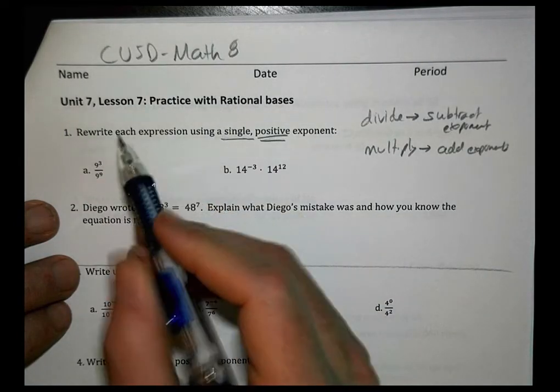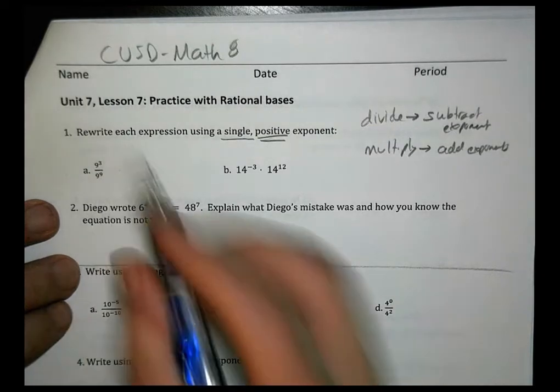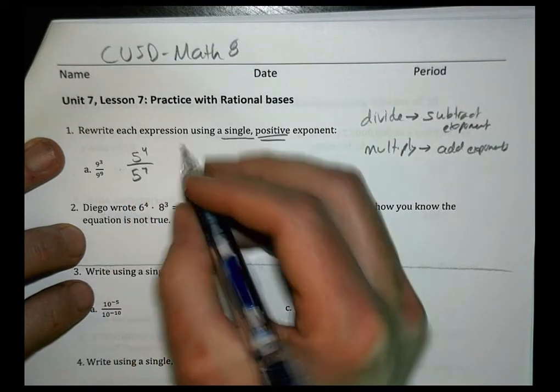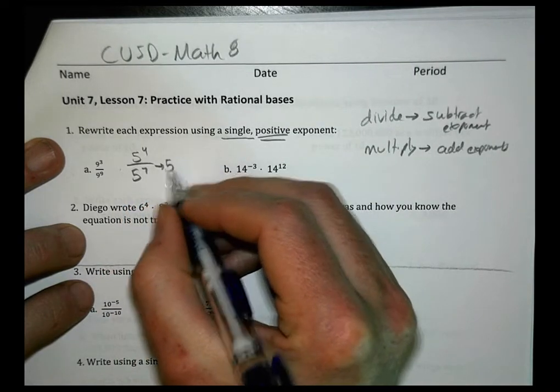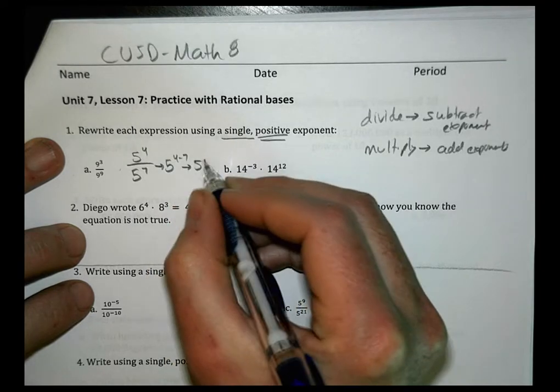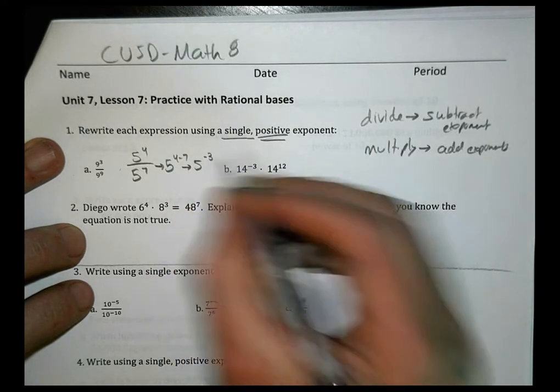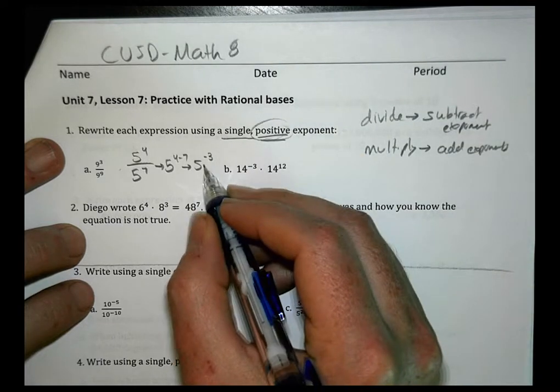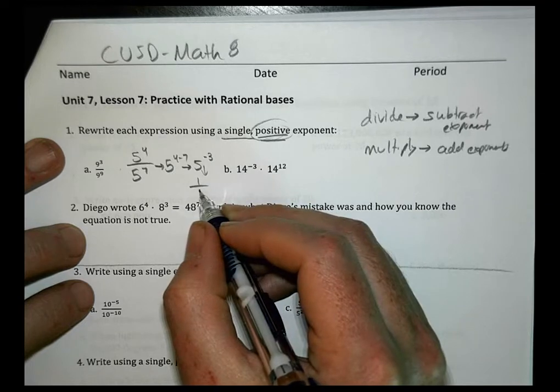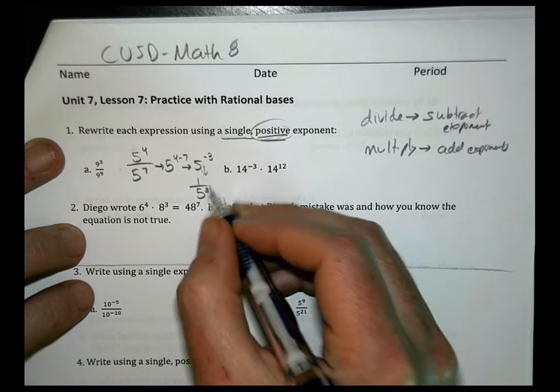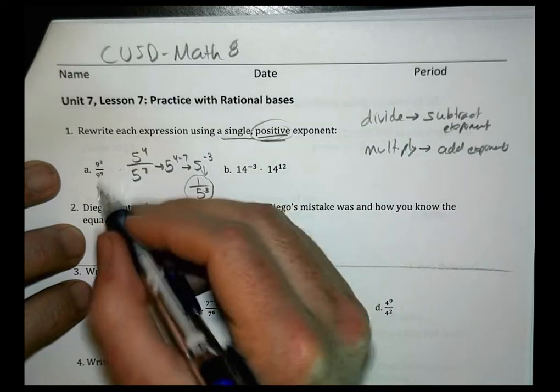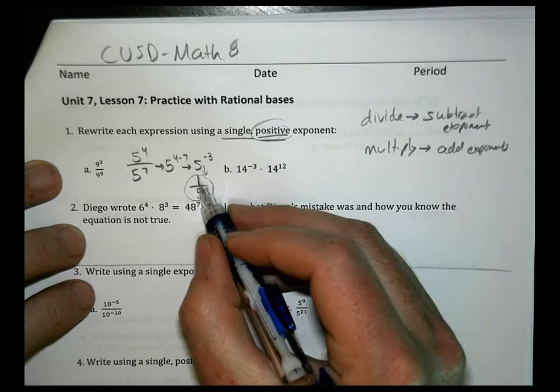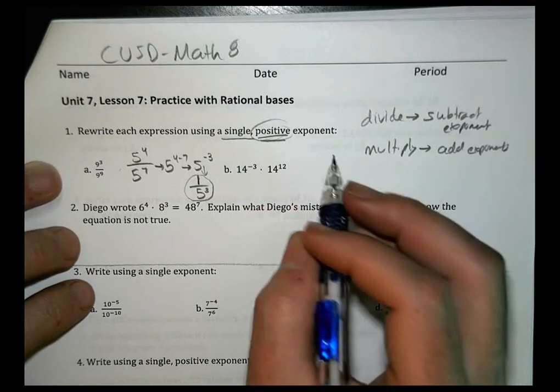Notice that when you do it, you might end up with, for example, if I had 5 to the 4th over 5 to the 7th, that would become 5 to the 4 minus 7, which gives me 5 to the negative 3rd power. I don't want to leave it as a negative though, I want to keep it positive, so it means I need to move this guy downstairs and write it as 1 over 5 to the 3rd power. Make sure as you're doing your work that if you end up with a negative exponent, you put them in the right floor, either upstairs or downstairs, to make sure it ends up being positive.